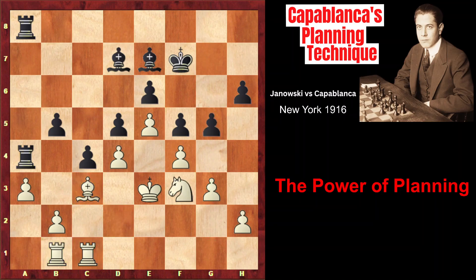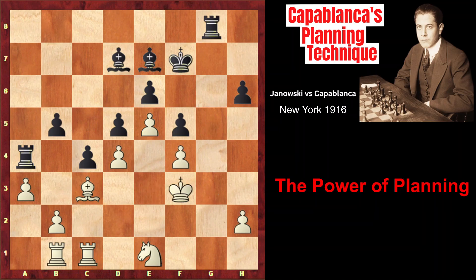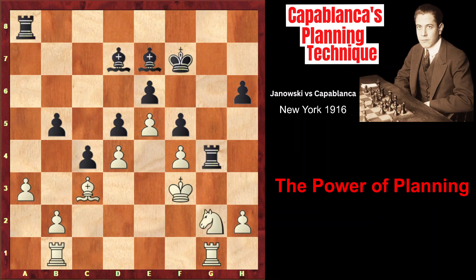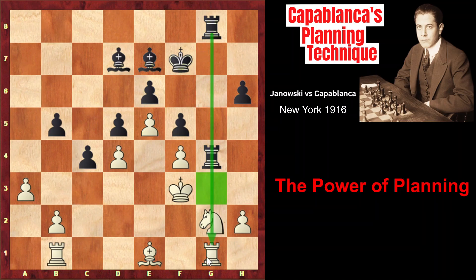Nf3. g5. Ne1. Rook g8. King f3. Gxf. Gxf. Rook a8. Ng2. Rook g4. Rook g1. Rook g8. And now this knight is pinned — it cannot move because the rook would fall. In order to solve this problem, Janowski played Be1 in order to place the bishop on g3 and close the g file, where black has terrible pressure.